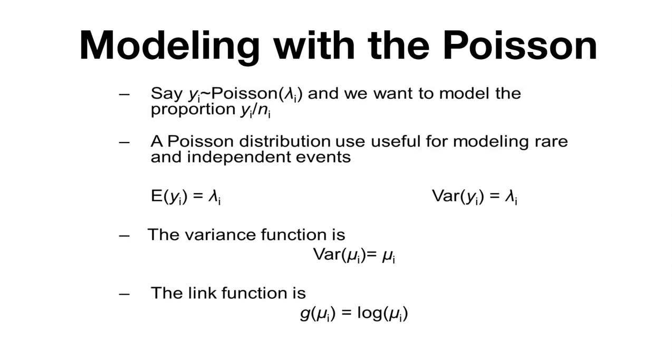It's useful for modeling rare and independent events. What I like about the Poisson distribution is the expected value, or the mean, is lambda and the variance is lambda. The mean is equal to the variance in this case, which is often the case when we deal with lots of data that are noisy. The variance function is mu_i, and the link function is the log of mu_i.